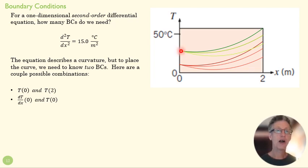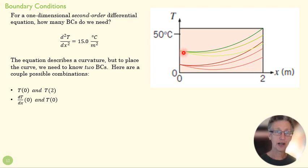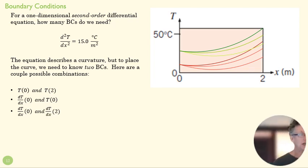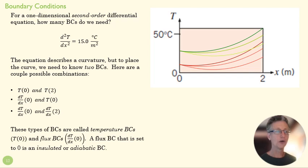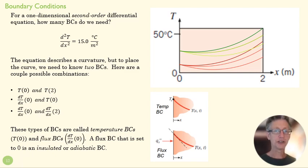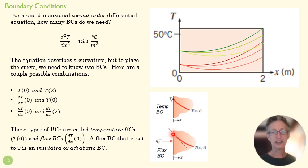We could know our slope at x equals zero and what our temperature is at zero — that would also give a unique curve. So the BCs could be a flux and a temperature, two temperatures, or two fluxes. All of those turn a general solution into the particular solution we want. A temperature BC tells us what the temperature is at that boundary. The flux BC tells us what dT/dx — the slope of the temperature field — is at that boundary.